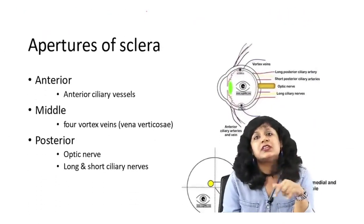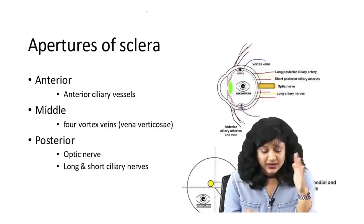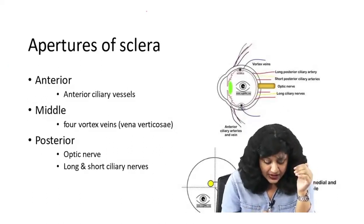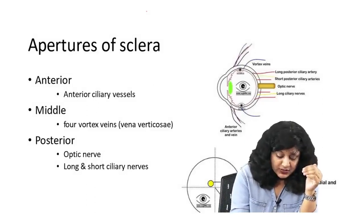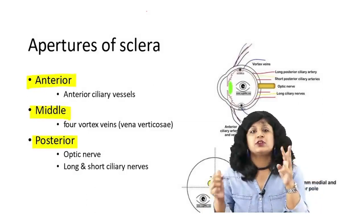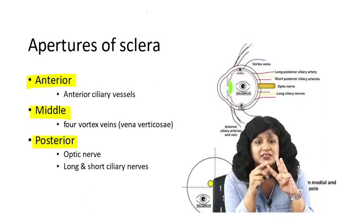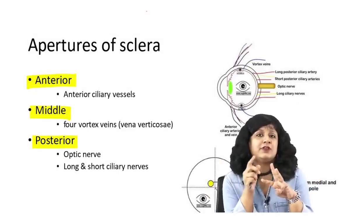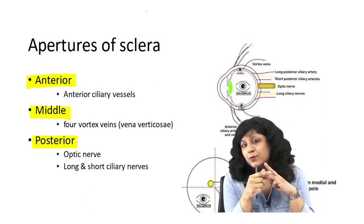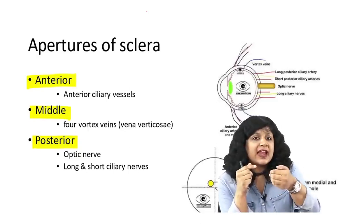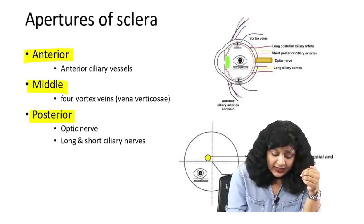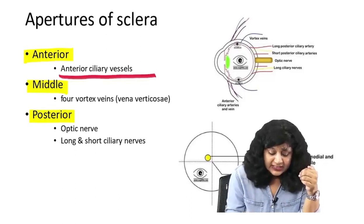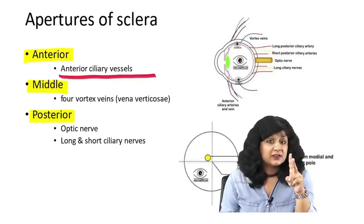Now we talk about the apertures of the sclera. We have divided these apertures into anterior, middle, and posterior — three kinds of apertures. Through the anterior apertures, the things which are passing are the anterior ciliary vessels.